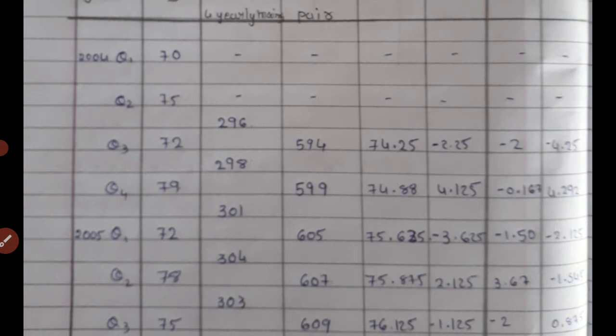The total of the pair of consecutive 4-year totals is 296 plus 299 equals 595. For 4-yearly moving average, divide the total of the pair by 8: 594 divided by 8 gives 74.25 as the trend value. So STF equals original value minus trend: 72 minus 74.25 equals minus 2.25.